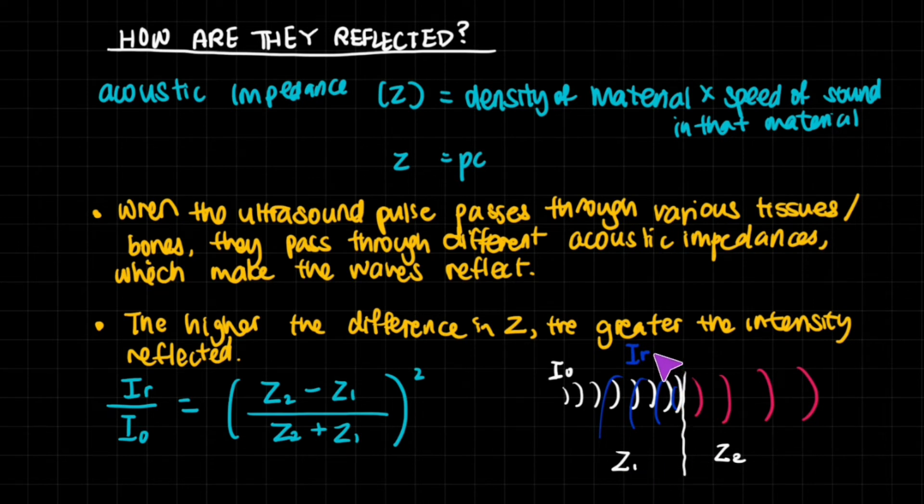Let's say you have a boundary between fat and another tissue. They're going to have very similar densities. A lot of the tissues in the body, although they are different, have very similar densities and hence very similar speed of sound in that material as well. That means that the majority of the incident wave is going to be transmitted onto the next part of the body, and very little is going to be reflected.